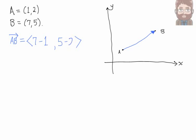In traveling from A to B, I go a distance of 6 in the x direction and 3 in the y direction. I travel over 6 and up 3 units.